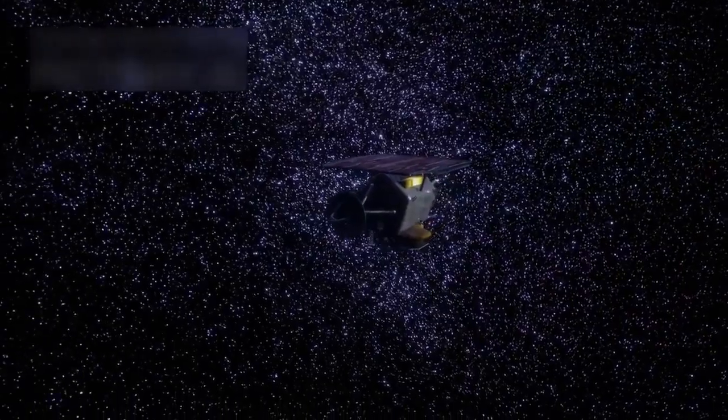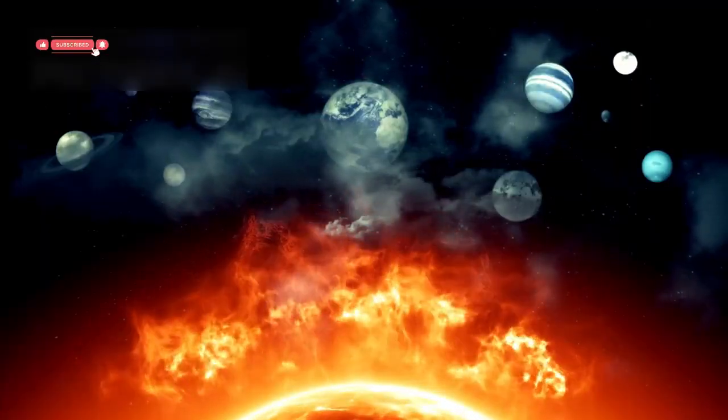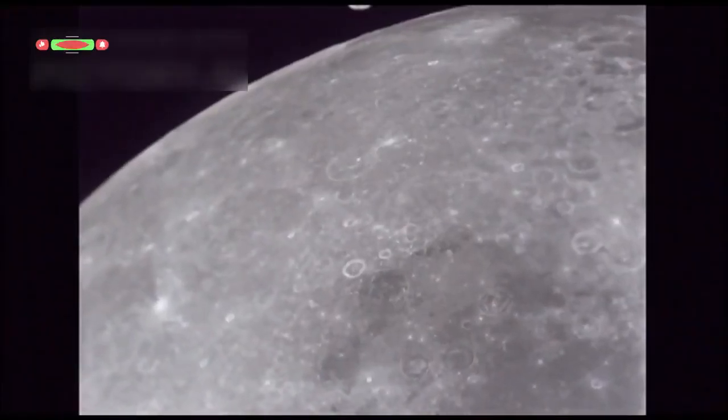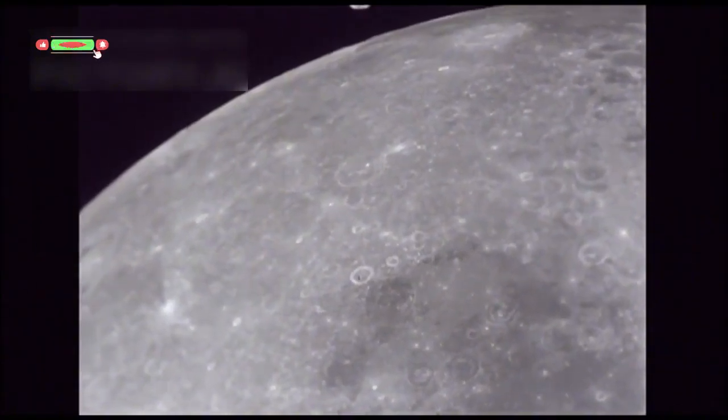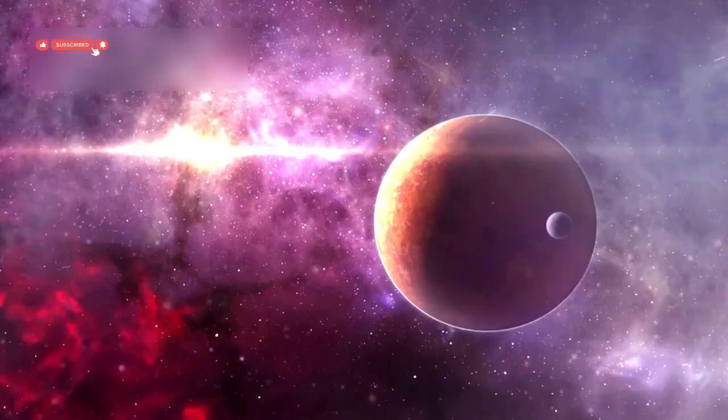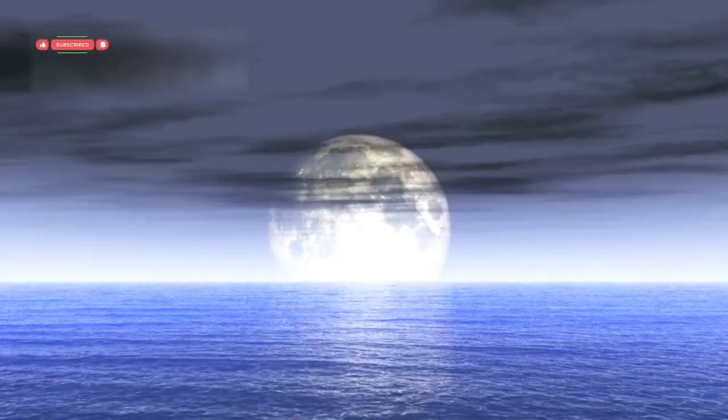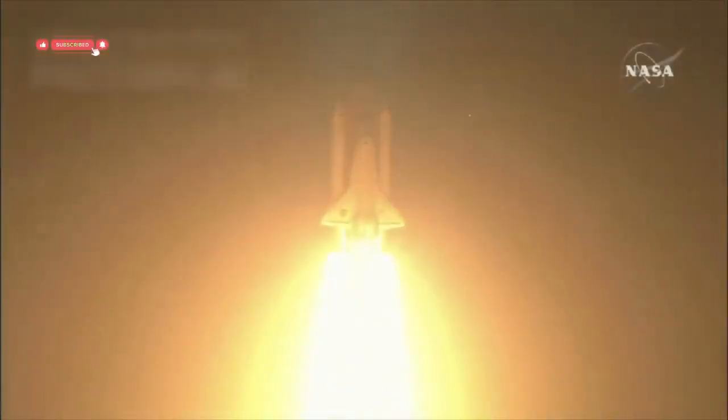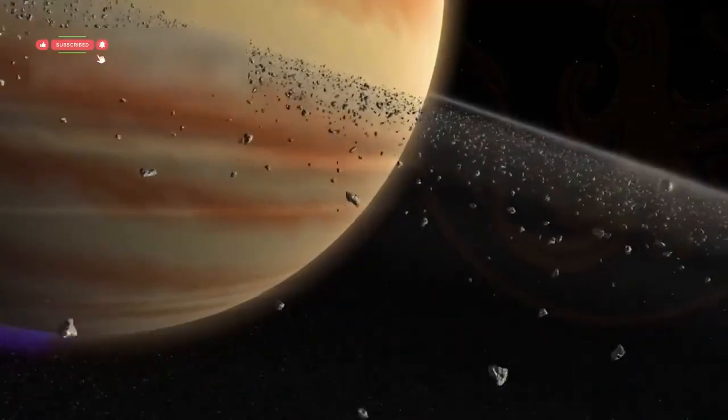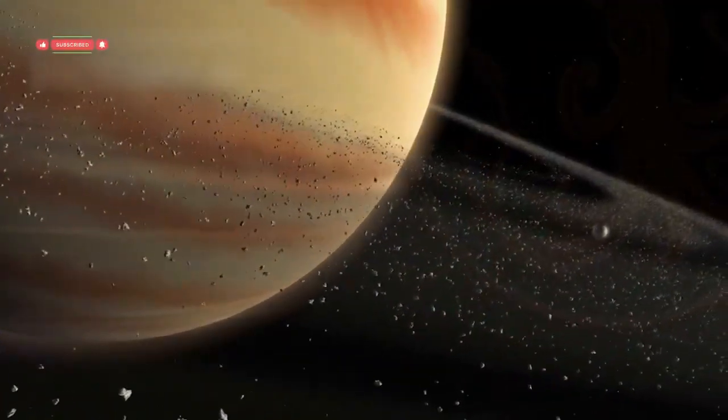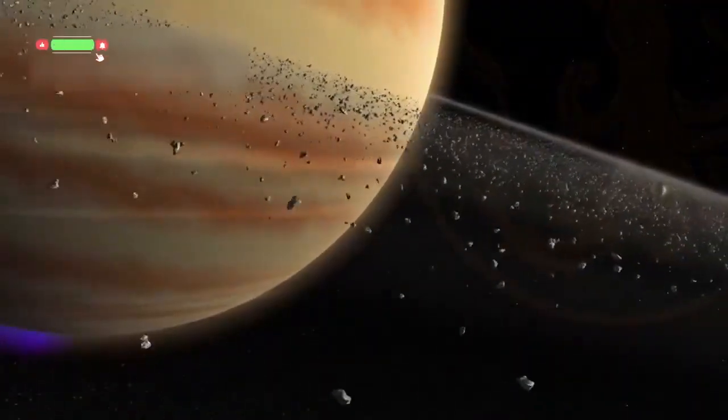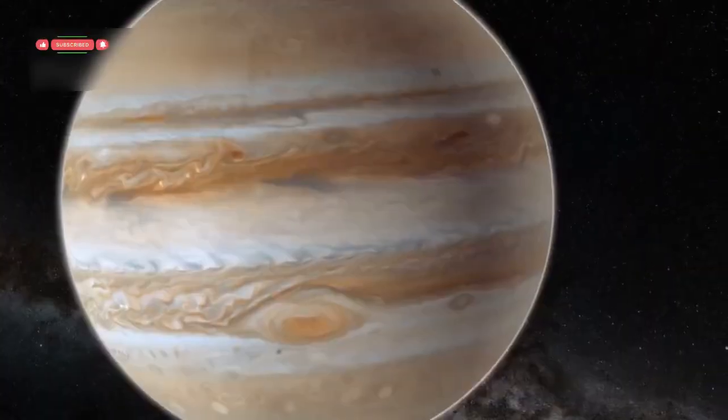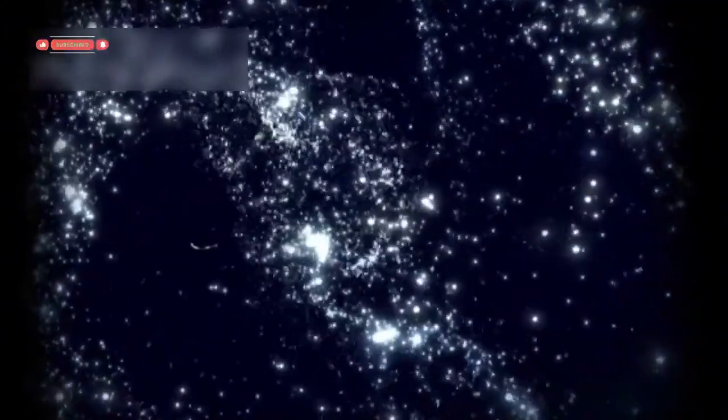The legacy of the Voyager mission is immense. It has changed how we understand the solar system and inspired generations of scientists and engineers. Before Voyager, many of the planets and moons were just dots in the sky. By the end of the mission, images and data from the Voyagers had rewritten textbooks around the world. We learned that moons thought to be dead could be active and even have oceans under ice. These discoveries led to whole new missions. For example, Cassini was sent to explore Saturn after Voyager hinted that its moon Enceladus might have water. Juno was later sent to study Jupiter up close because Voyager showed how complex the planet really is. The idea that life could exist on other worlds was energized by Voyager.